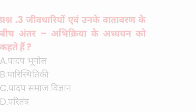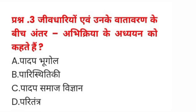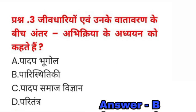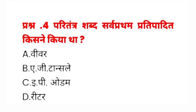Question number three: जीवधारियों एवं उनके वातावरण के बीच अंतर अभिक्रिया के अध्यन को कहते हैं — A) पादप भूगोल, B) पारिस्थितिकी, C) पादप समाजविज्ञान, D) पारितंत्र। इसका सही जवाब B) पारिस्थितिकी होगा।